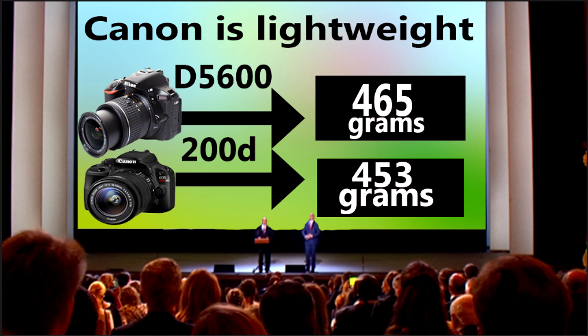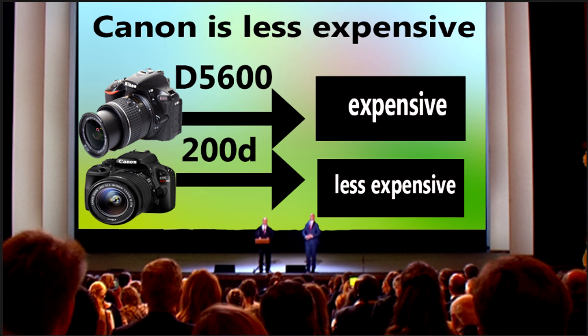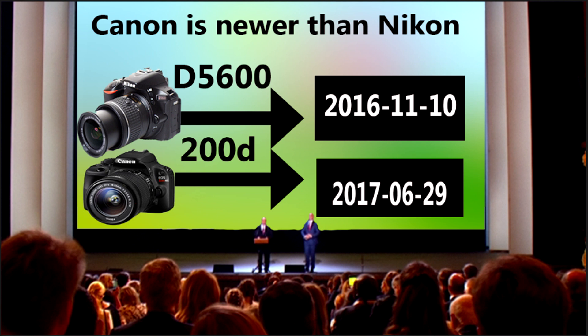Canon is lightweight at 453 grams, compared to Nikon's 465 grams, making Canon 12 grams lighter. Canon is also less expensive when compared with the Nikon D5600, and Canon is a more recent model than the Nikon D5600.